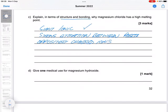Give one medical use for magnesium hydroxide. So indigestion tablets, Rennie, Gaviscon, antacid.